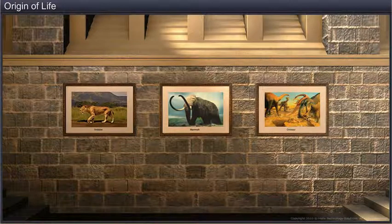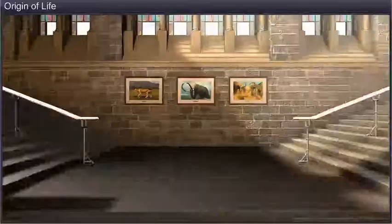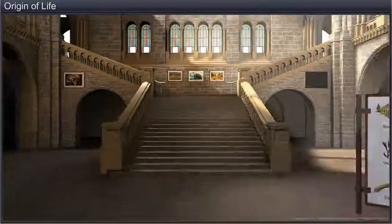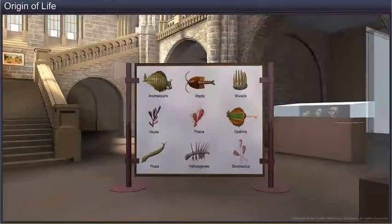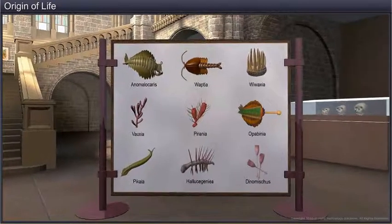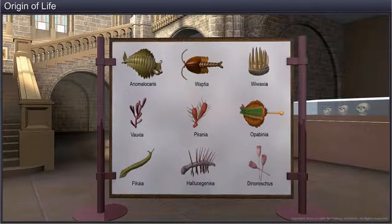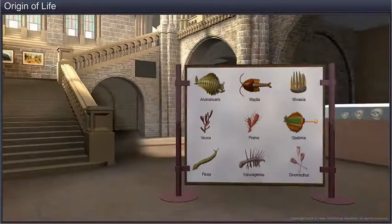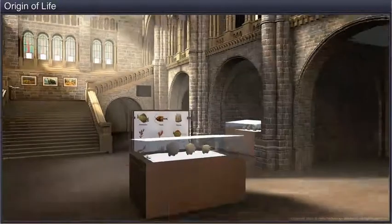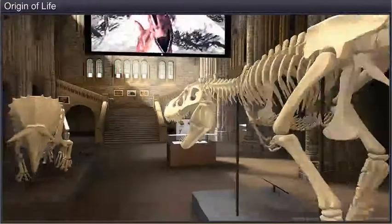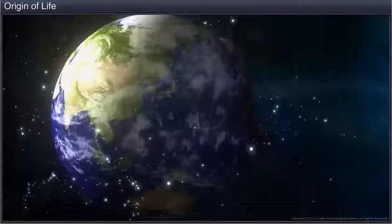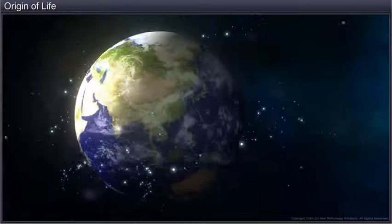Looking at the pictures of these extinct prehistoric animals, it is difficult to believe that they had once walked on our planet. In fact, the Earth and its numerous life forms were originally different. To understand the changes in life forms on Earth over millions of years, we need to know how life originated.